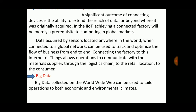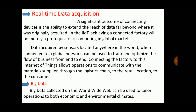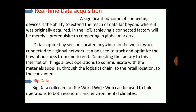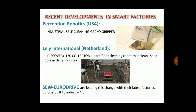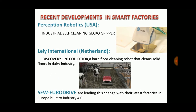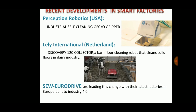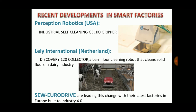All operations can communicate from the material supplier through the logistics chain to the retail location to the consumer. Big data collected on the worldwide web can be used to tailor operations to both economic and environmental conditions.